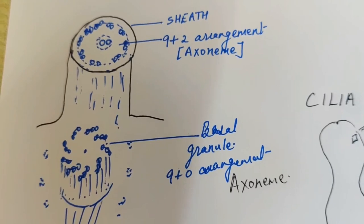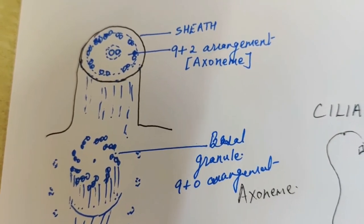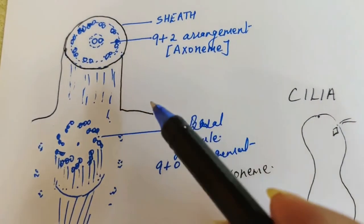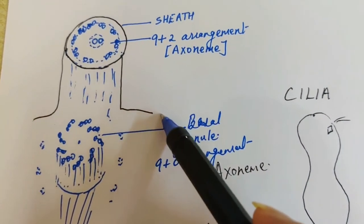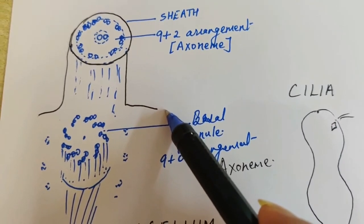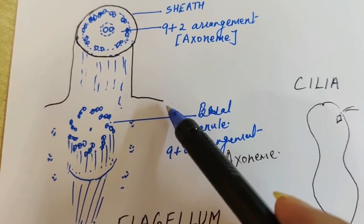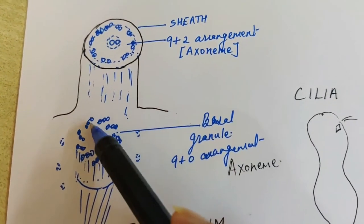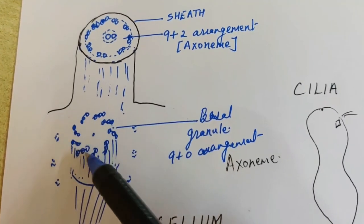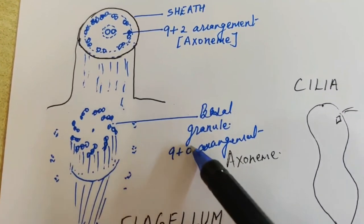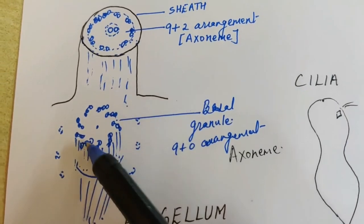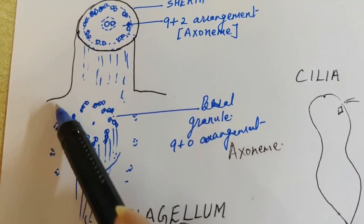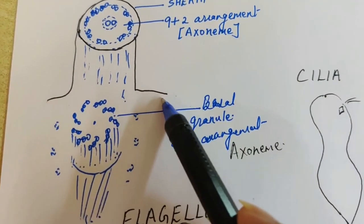Now we can see the relationship between the centriole and the exoneme part of cilia or flagella. So if this is the cell membrane of the organism, let's say paramecium or euglena or any other cell with the cilium or flagellum, as a basal granule or basal body we have this 9 plus 0 arrangement. Centriole lying at the base, just below just below the cell membrane. This is a cell membrane.